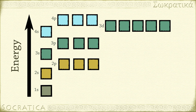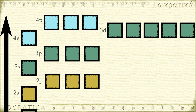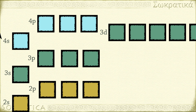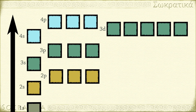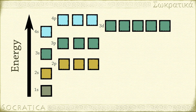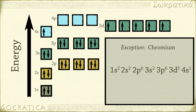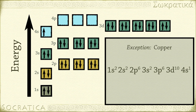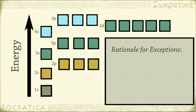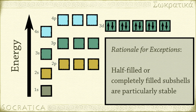After the second energy level, you really have to pay attention to the energy level diagram. For instance, notice that the 4s orbital has lower energy than the 3d orbital, so you should fill the 4s orbital first. But these two orbitals are so close in energy that for a few elements, electrons go into the 3d orbital first. For example, in chromium, the electron configuration ends in 3d5 4s1 instead of 3d4 4s2. Similarly, copper's electron configuration ends with 3d10 4s1 rather than 3d9 4s2. The rationale for these exceptions to the Aufbau principle is that half-filled or completely filled subshells are particularly stable arrangements of electrons.